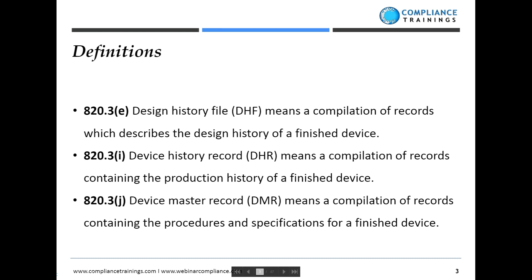A few definitions: the Design History File is a compilation of records that describes the design history of the finished device. We'll talk about what the agency's final rule says about what's included and not included in the Design History File. The Device History Record is developed out of the Design History File work and demonstrates that production was made in accordance with the Device Master Record, which is compiled through the transfer process into production. The Device Master Record is a compilation of all the procedures and specifications for the finished device.